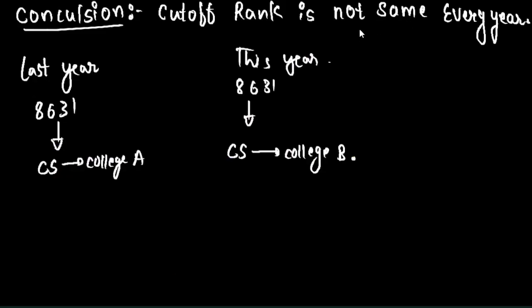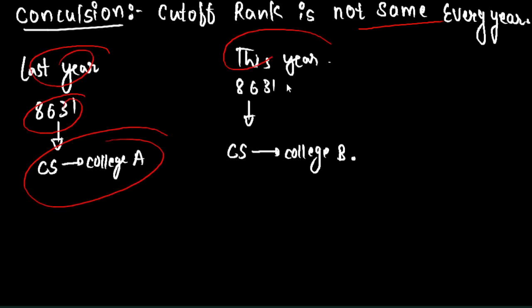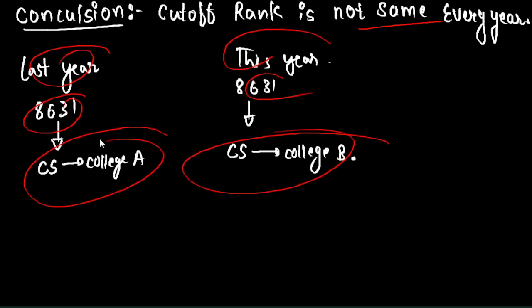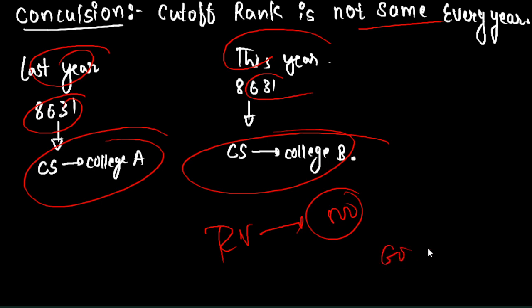The cutoff rank is not the same every year as last year. For the same college, the rank can vary. Last year a college cutoff may have been 800, but this year it could be 600 — a difference of 200. It completely depends upon the number of students who apply.